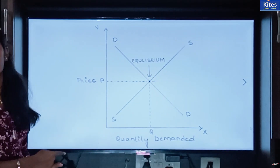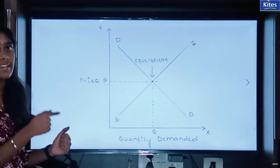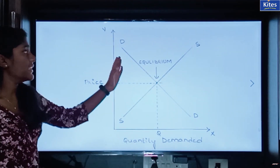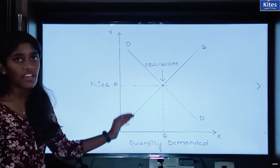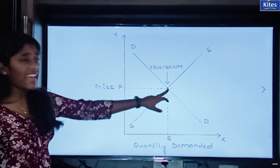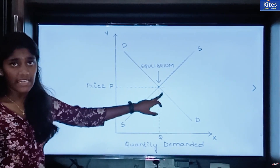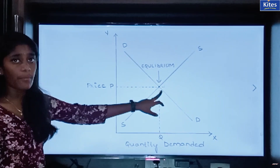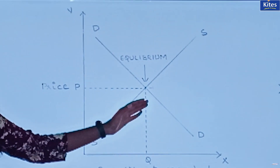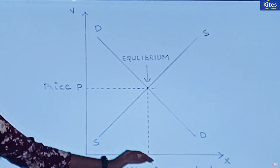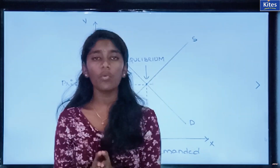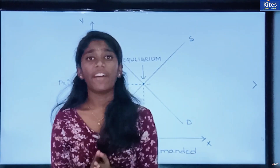If this table is depicted in the form of a graph, then the demand curve is downward sloping and your supply curve is upward sloping. Where the demand and supply curves meet, that is your equilibrium point. At the equilibrium point, whichever price is there is your equilibrium price and whatever output is there is your equilibrium output.